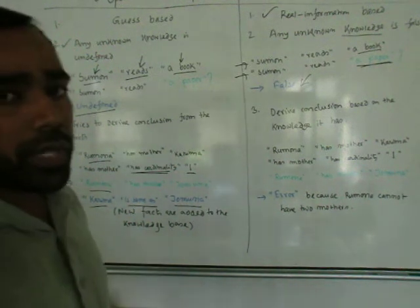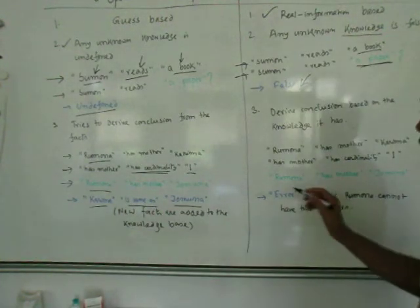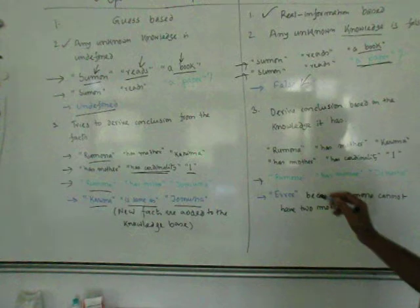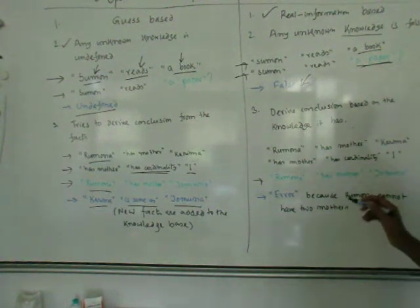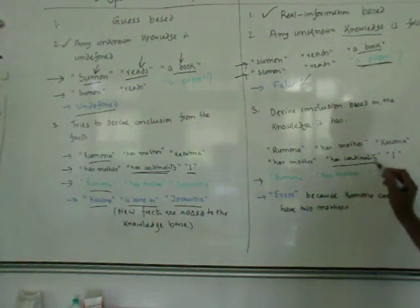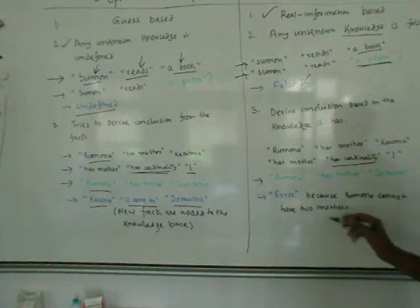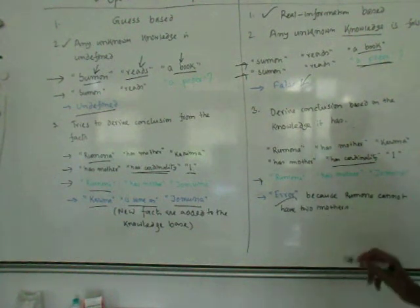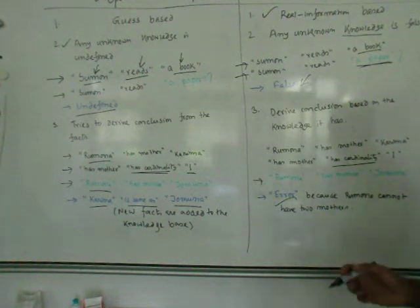But in the closed world assumption, when the statement 'Rumona has mother Jamona' comes in, since cardinality is one, it means Rumona cannot have two mothers — so it shows an error.